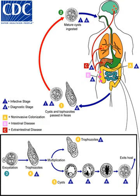E. histolytica infections occur in both the intestine and, in people with symptoms, in tissue of the intestine and/or liver. Those with symptoms require treatment with two medications: an amoebicidal tissue active agent and a luminal cysticidal agent. Individuals that are asymptomatic only need a luminal cysticidal agent.